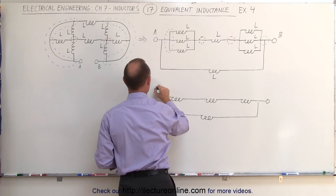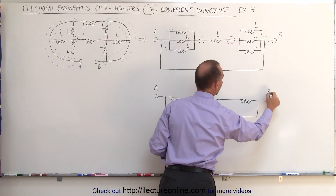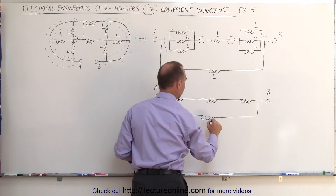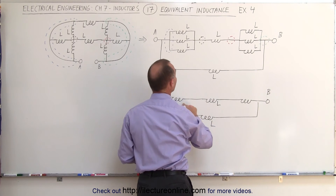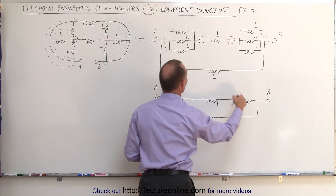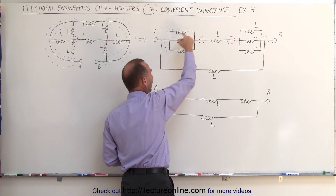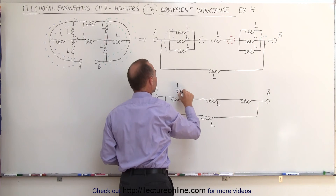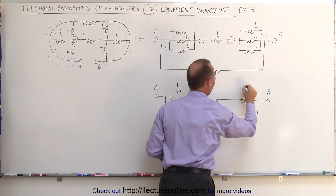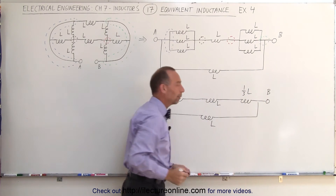This is A, this is B. This one is unchanged, and so is this one. But these two are now the equivalent inductance of the three combined — which is one third L for this one and one third L for that one.